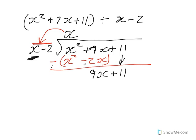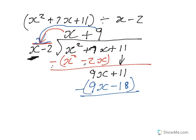To get 9x, we multiply x by 9. We take this 9 and multiply it by x minus 2: 9 times x is 9x, 9 times negative 2 is negative 18. We subtract all of that: 9x minus 9x is nothing. Negative and a negative is a positive, so 11 plus 18 is 29. This division leaves us with a remainder of 29.